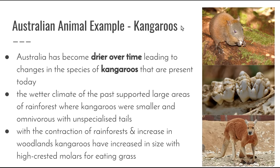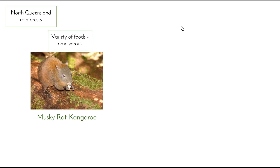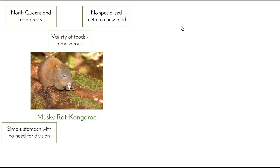A good Australian example has been the evolution of kangaroos. During the Oligocene and early Miocene epochs, Australia was bathed in rains that supported rainforest environments over much of the continent. Kangaroos were omnivorous — eating both plant and meat materials — with unspecialised tails, foot structure, and diet. The only kangaroo today that closely resembles these early kangaroos and retains their primitive features is the musky rat kangaroo, which is found only in the North Queensland rainforests. It eats a variety of foods abundant on the rainforest floor and has no real need for specialised teeth, as there is no need to chew food to extract all nutritional value. For the same reason, its stomach is a simple sack with no division into several cavities like our modern kangaroo.